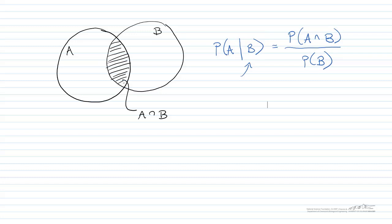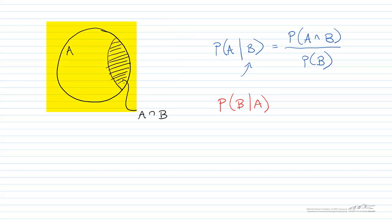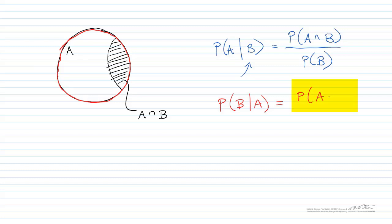Another way of looking at this: what's the probability that B has occurred given that A has occurred? We can just look at the left circle here. Given that A has occurred, we're talking about just this circle — that's why the right side is erased. That's going to be equal to the probability of the intersection divided by the probability that A has occurred.